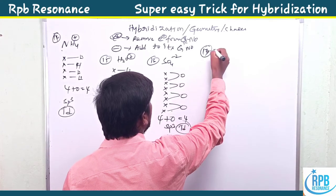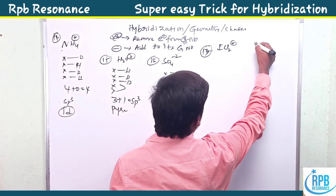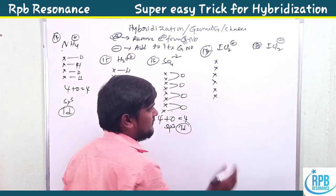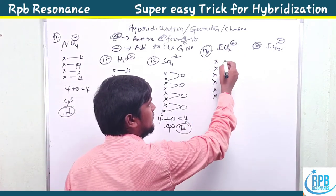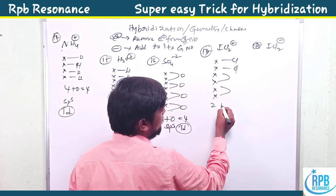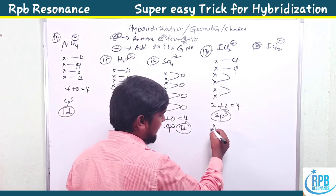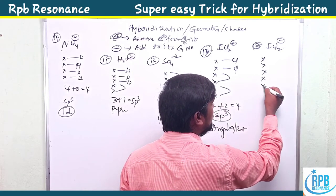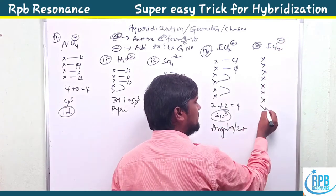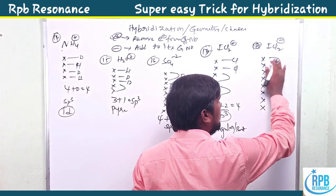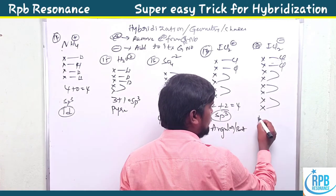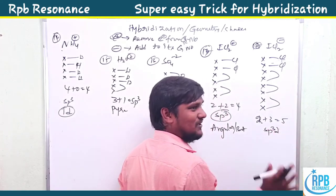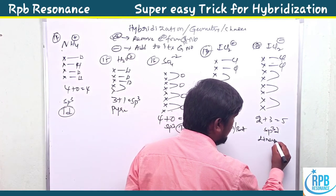For ICl2+, iodine's group number is seven; with a cation, remove one electron, giving six. With two chlorines and two lone pairs: two plus two equals four — sp3 hybridization, angular or bent shape. For ICl2⁻, iodine's group number is seven; add one electron for the anion, giving eight. With two chlorines and three lone pairs: two plus three equals five — sp3d hybridization, linear shape.